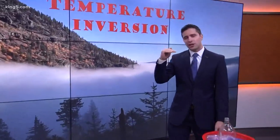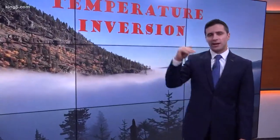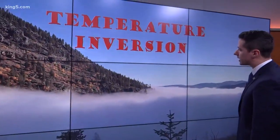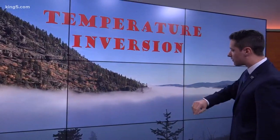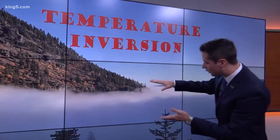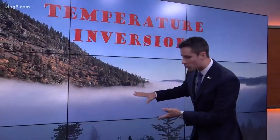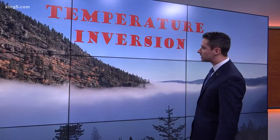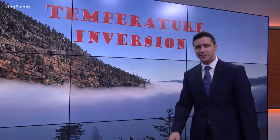It's when the air actually gets warmer as you get higher up. This is a strong inversion right here — this is out towards the Leavenworth area. You can see the cold, more dense air sinking into the valleys, and in the meantime, up in the mountains, it's nice and sunny.